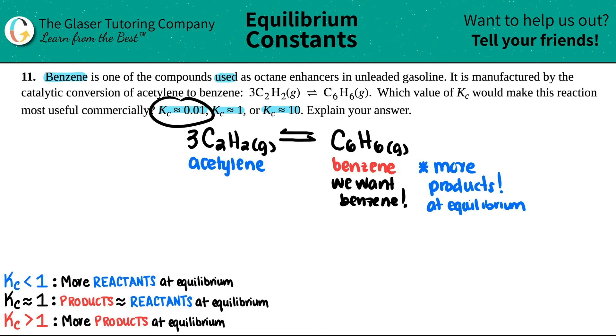A Kc value of 0.01, a Kc value of 1, or a Kc value of 10. Which one of these is the Kc value that's greater than one? It's this one. So in this case, we would want the Kc value of roughly 10 because this one is the Kc value that is greater than one, which means that there would be more products at equilibrium and you would have more benzene to use in the gasoline.